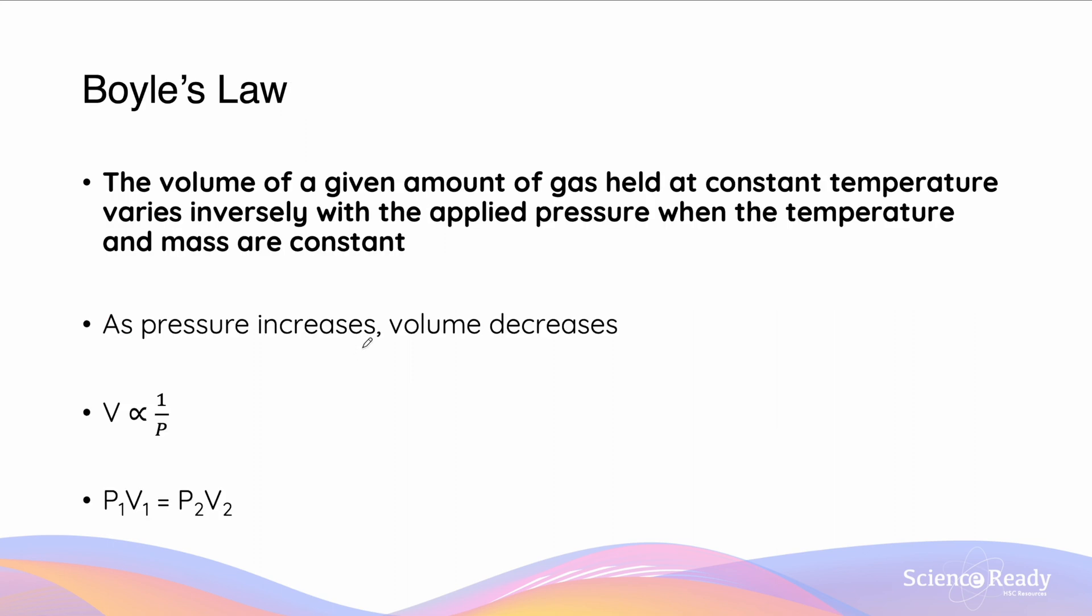The first law is Boyle's law, which is the law that claims that the volume of a particular amount of gas held at a constant temperature will vary inversely with the applied pressure when the temperature and the mass are constant. So what does this mean? Well essentially what it's saying is that as we increase pressure, the volume is going to decrease. So volume is proportional to 1 over pressure.